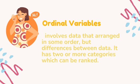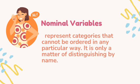Other examples of ordinal variables include t-shirt sizes and military rank. A nominal variable represents categories that cannot be ordered in any particular way — it is only a matter of distinguishing by name. The responses to a nominal variable can be divided into two or more categories. A nominal variable is qualitative, meaning numbers are used only to categorize or identify objects. Examples include gender and hair color. Nominal variables can take quantitative values; however, these quantitative values do not have numeric properties, and arithmetic operations cannot be performed on them.